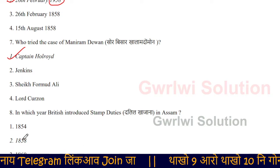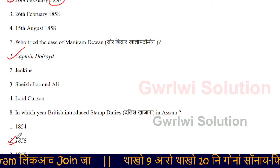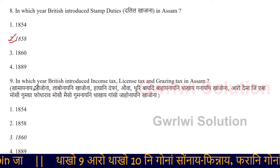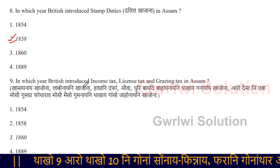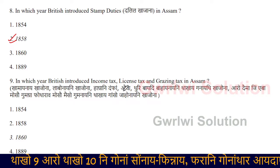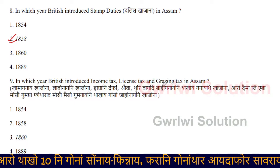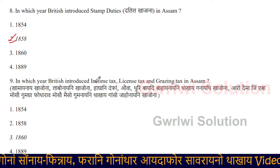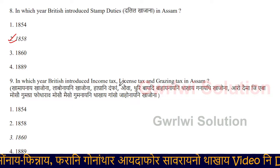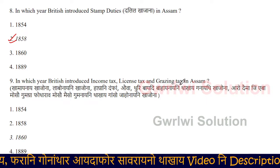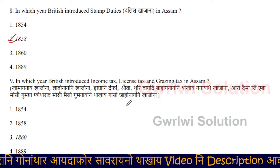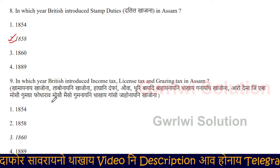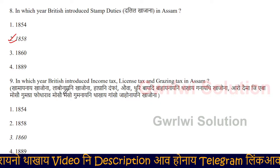The British introduced stamp duties in 1858. Next: in which year did the British introduce income tax, license tax, and grazing tax in Assam?